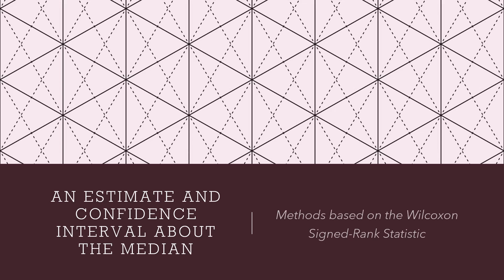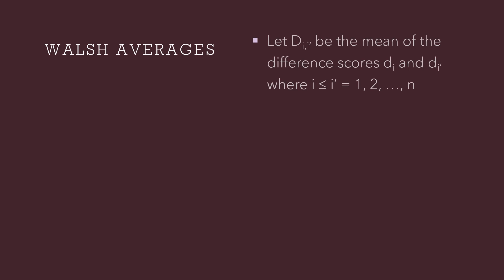In order to use this method, we first need to learn about Walsh averages. Let capital D sub i, i-prime be the mean of difference scores lowercase d sub i and d sub i-prime, where i is less than or equal to i-prime, from one up to the number of observations. This statement seems quite abstract, so let's look at an example. I'm going to use the values from previous videos: 3, minus 2, 7, 6, minus 1, and 12 — that is, we have six observations.